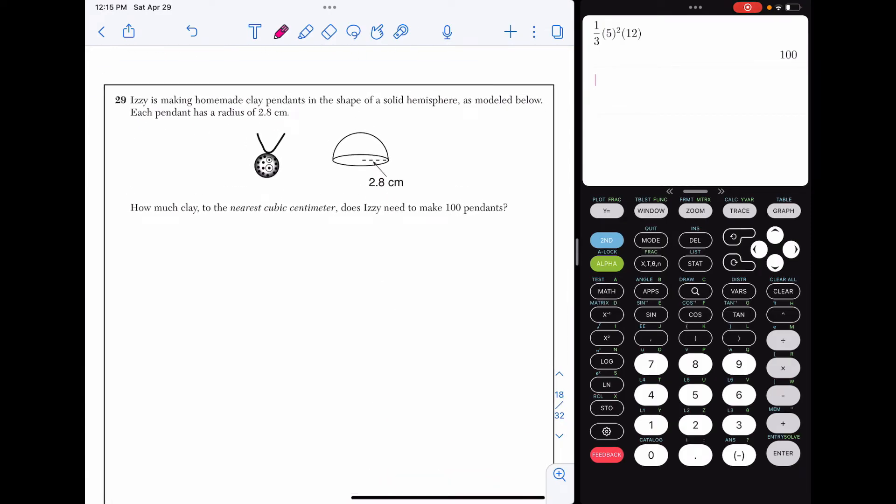Question 29. Izzy is making homemade clay pendants in the shape of a solid hemisphere as modeled below. Each pendant has a radius of 2.8 centimeters. How much clay to the nearest cubic centimeter does Izzy need to make 100 pendants?